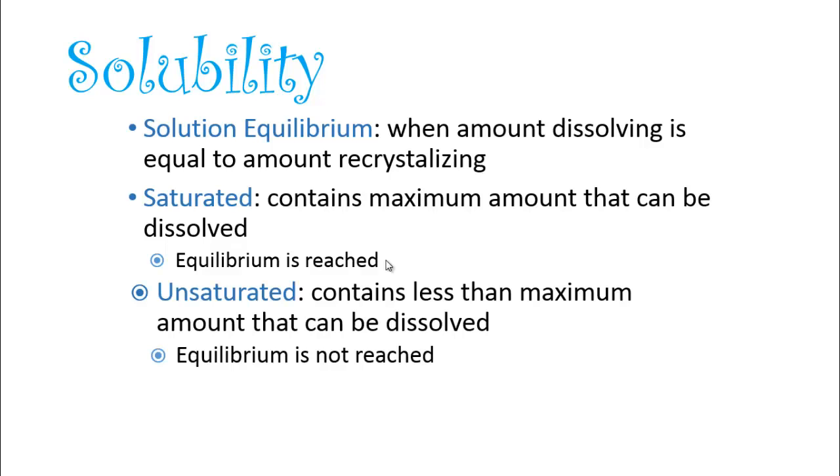However, if a solution is unsaturated, it is going to contain less than the maximum amount that can be dissolved. We don't have enough solute. There's still room to dissolve more solute. Equilibrium has not yet been reached. We're basically still in one direction. We still have more room to dissolve. The dissolving process is the only process that is going to be going on.